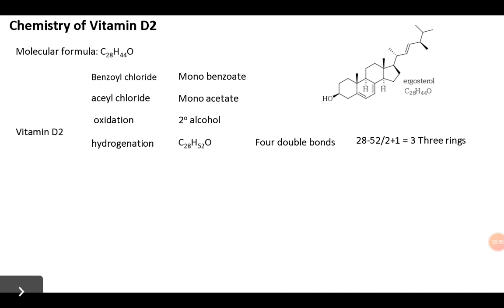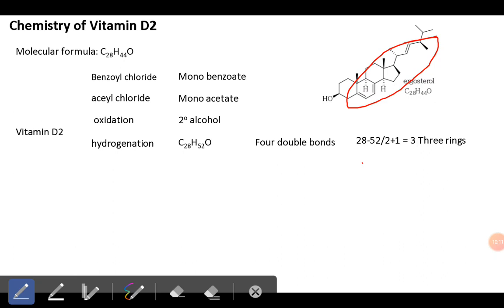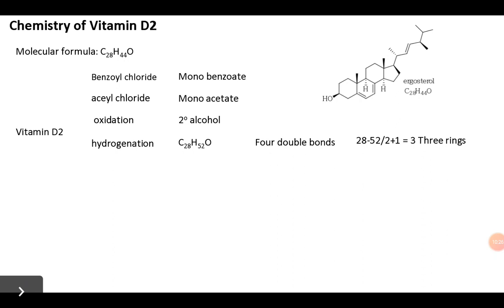When you calculate number of unsaturations for C28H52O, it shows three unsaturations still there, meaning three rings are present. This indicates that in ergosterol we have four rings and three double bonds, whereas in vitamin D2 we have four double bonds and three rings. One of the rings present in ergosterol might get degraded, so vitamin D2 is structurally related to ergosterol.